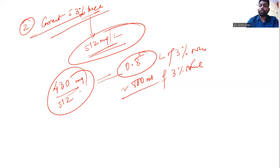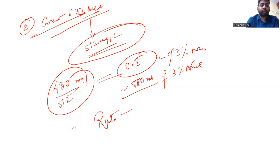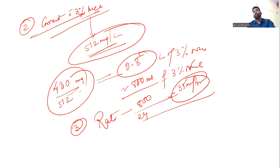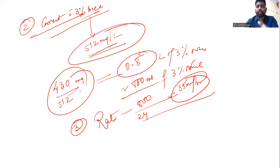What should be the rate of infusion per hour? That is what the examiner will ultimately ask. The rate of infusion of 3% normal saline is: divide 800 mL by 24 hours, and you get milliliters per hour — this comes out to roughly 30 to 35 mL per hour. So in the first 24 hours, your rate of correction should be around 30 to 40 mL per hour of 3% normal saline. This is how you correct hyponatremia.